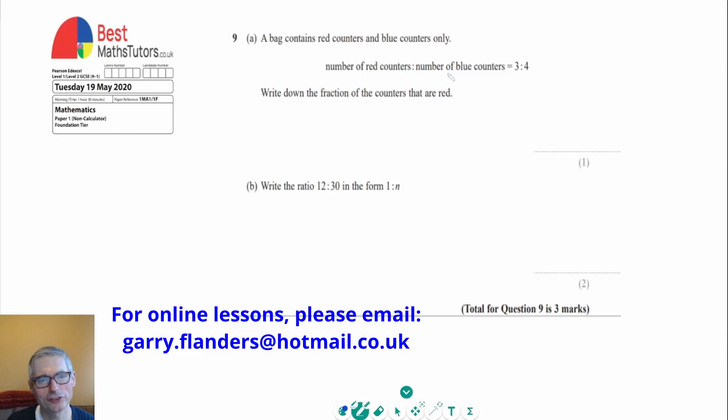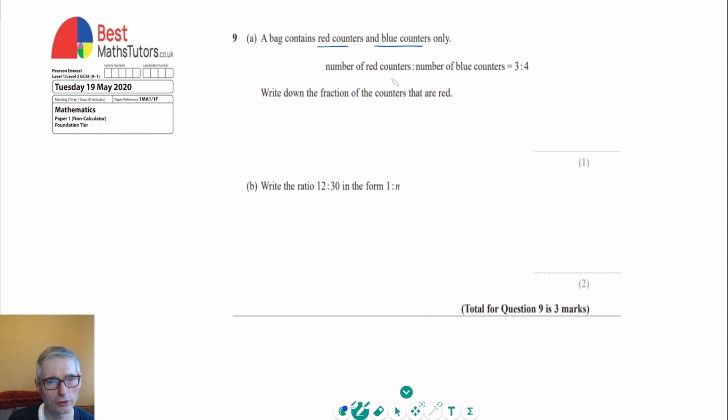This is question nine, a question about ratio and proportion. We've got this bag here which has red counters and blue counters in it. The ratio of the number of red counters to the number of blue counters is 3 to 4, and we've got to write a fraction of the counters that are red.